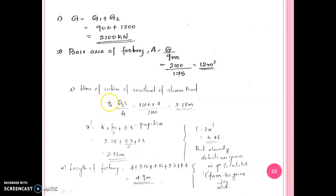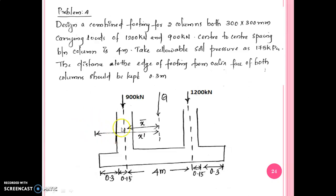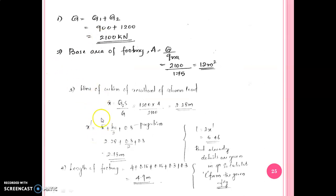We calculate x-bar, which is equal to Q2 multiplied by S divided by Q. Then x-dash is equal to x-bar plus B1 by 2. With the projection equal to 0.3, x-dash is equal to x-bar plus B1 by 2 plus 0.3.